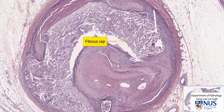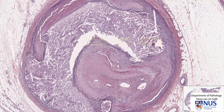When the fibrous cap ruptures, this causes formation of a thrombus which further narrows and sometimes occludes the entire lumen of the coronary artery, and of course this then leads to myocardial infarction.